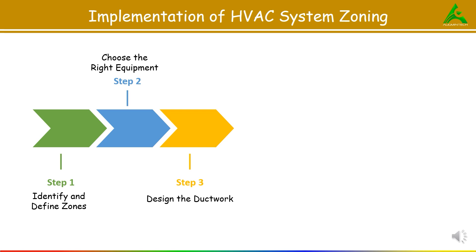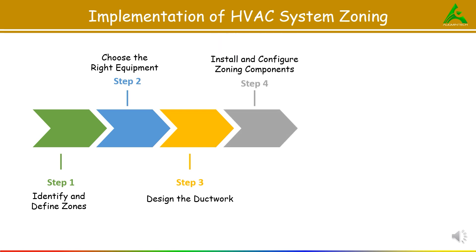The third step is to design the ductwork. Ductwork should be properly designed to accommodate changes in air flow due to damper adjustment and minimize pressure drop to maintain system efficiency. The fourth step is to install and configure zoning components. After planning, proceed with the installation — place thermostats in central locations within each zone for accurate temperature measurement, then install the dampers and set up the zone control panel. Connect thermostats, dampers and the HVAC unit to the control panel, and then test the system to ensure proper communication and responsiveness between components.